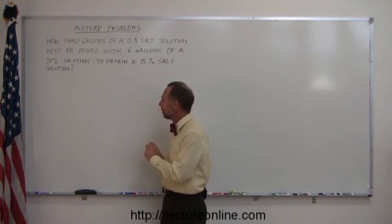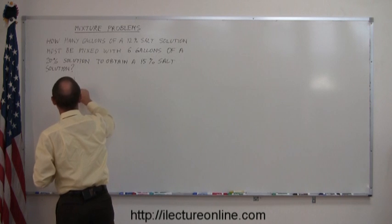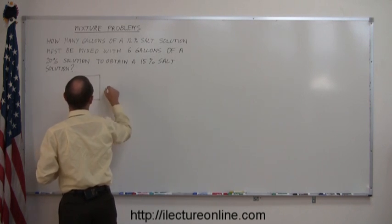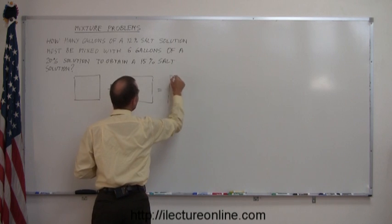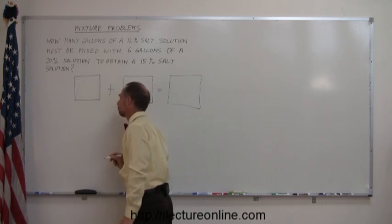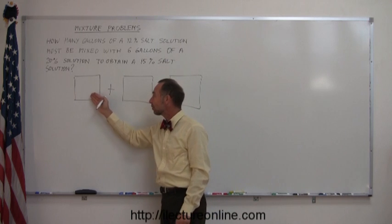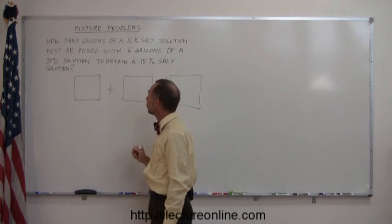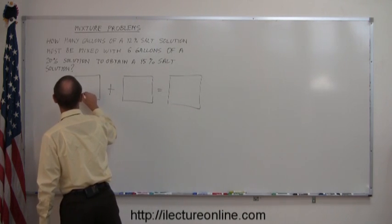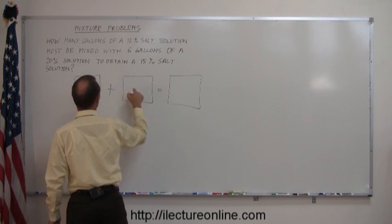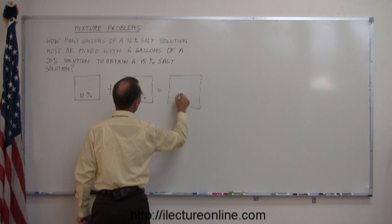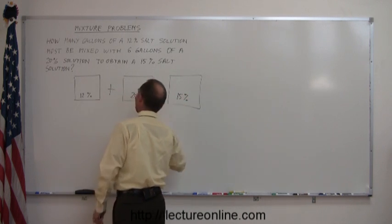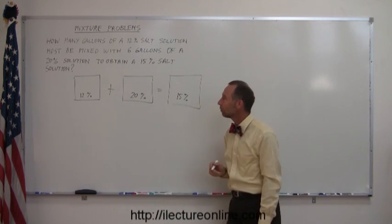So again, the same approach is that we're going to add up some mixture to another mixture and that will result in a final mixture. And again, in each case, we write down what the percentage of each solution is. So the first is a 12% solution, the second one is a 20% solution, and the final mixture we end up with is a 15% solution. So you write down the percent solution of each mixture.